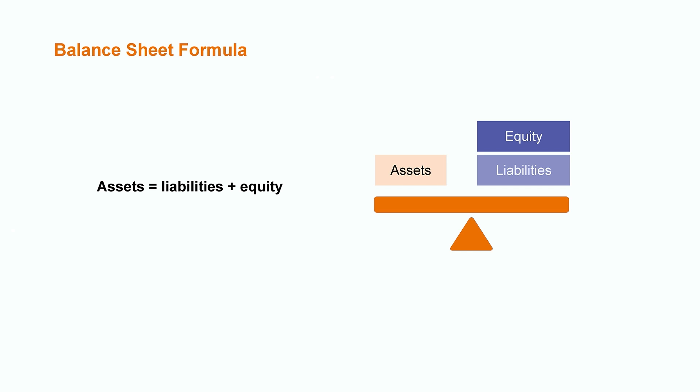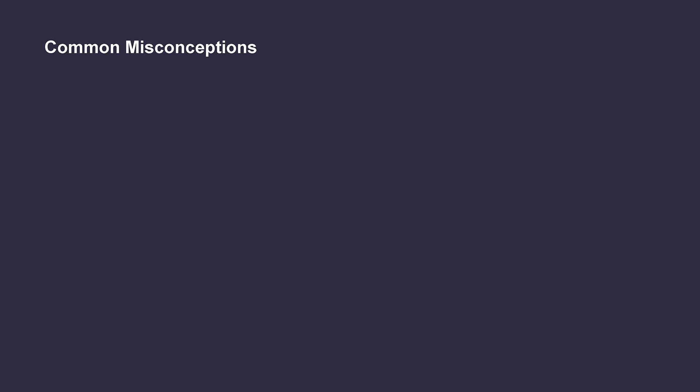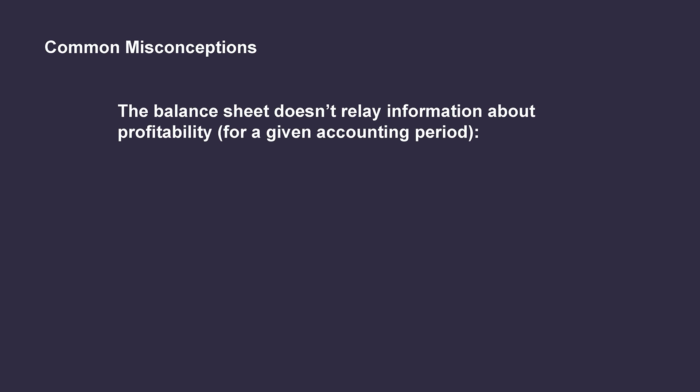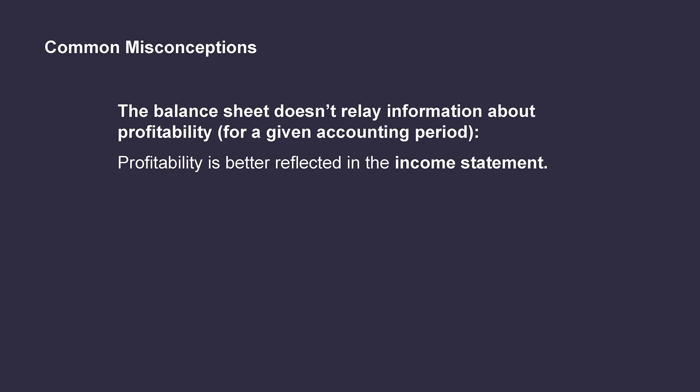From looking at a company's balance sheet, we can quickly get an understanding of whether a company is struggling or thriving, in addition to determining the company's value to shareholders and investors. Now that we have a good understanding of the balance sheet, let's talk about a common misconception. While the balance sheet provides extremely valuable information to users of the financial statements, one thing it does not do is tell us about the profitability for a particular accounting period. A balance sheet gives us a snapshot on a particular date and time, so if I wanted to find out how profitable a company was for the whole month of January, it would be difficult to tell from the balance sheet alone. In that case, I would be better off analyzing a company's income statement, which breaks down the details of a company's revenue, expenses, and profit.